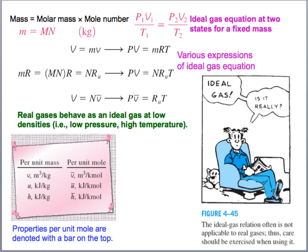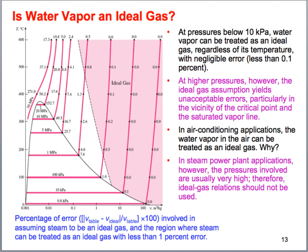A question to think about: how do we treat water vapor as an ideal gas? Or consider air at minus 100 degrees Celsius — is it appropriate to treat air as an ideal gas at that temperature? Is it applicable to treat water as an ideal gas? When is it applicable — can we do it when it has a certain quality? Think about that.